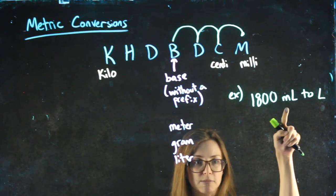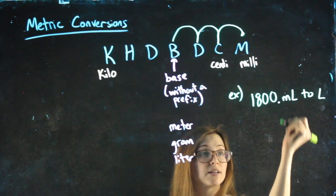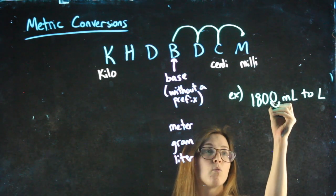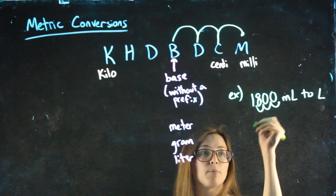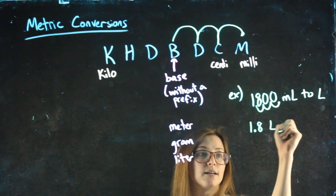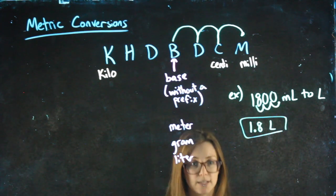So I move the decimal three spots to the left. Now there's no decimal written here, but if there were, it would be at the end of the number. And I would move it one, two, three spots to the left to get an answer of 1.8 liters.